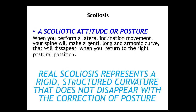We must remember the difference between an antalgic posture and real scoliosis. In real scoliosis, the curvature will not disappear when we try to correct the posture. In contrast, an antalgic posture — such as one caused by appendicitis pain — will correct itself when the patient returns to normal posture. That disappearance or persistence of the curvature is the key difference.